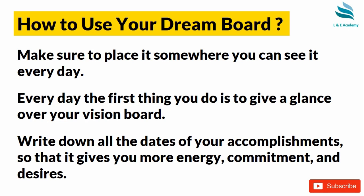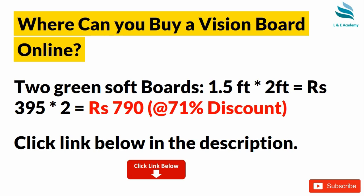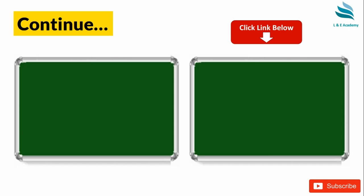Write down all the dates of your accomplishments so that it gives you more energy, commitment and desire to achieve more. Now, where can you buy a Vision Board? I searched many places and this is where I found mine. I bought two green soft boards of 1.5 by 2 feet, which cost 395 rupees per board — approximately 790 rupees total — at a 71% discount. I bought it through Amazon and I will put the link of those soft boards in the description. You can click and directly buy it from there. These soft boards are very affordable; I had to buy two and place them simultaneously so that it becomes one complete board.